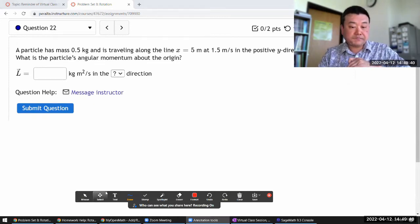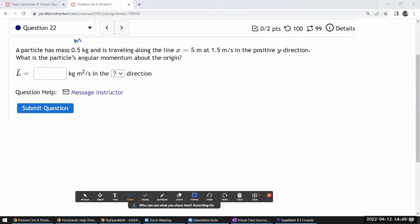It says a particle has some mass and is traveling along the line x equals 5 meters. That is such a potentially confusing way.